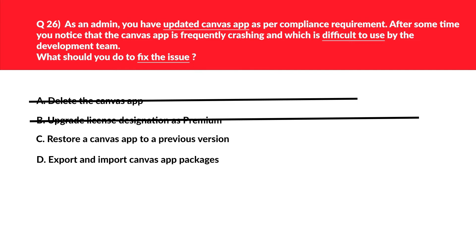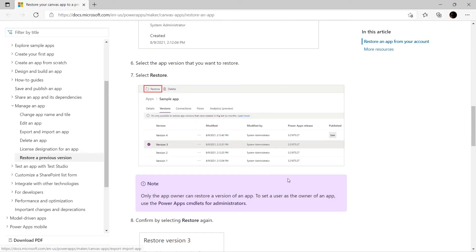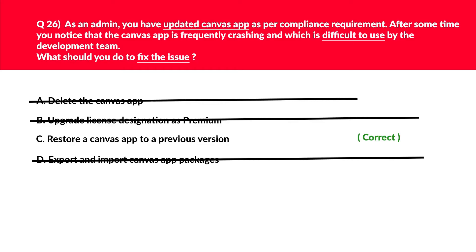Export and import canvas app packages are used when you want to switch from one environment to another. As per the question, there is no mention of changing environments — you need to fix the canvas app in the same environment. Hence, option D is incorrect. Looking at the official documentation, if you have multiple versions of the app, you have the option to restore previous versions when facing usability issues. We'll mark C as the correct answer.